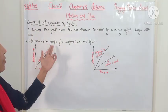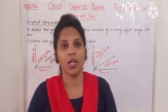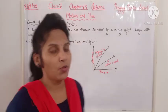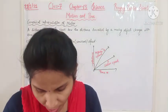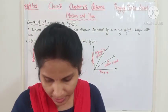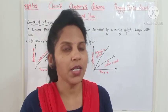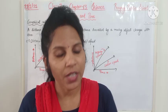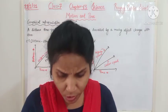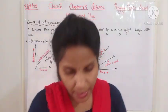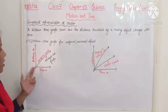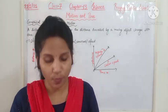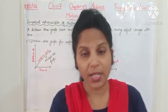Now we will study the distance-time graph for uniform or constant speed. When an object moves with uniform speed, it travels equal distances in equal intervals of time. The distance traveled by the object is proportional to time. When two things are directly proportional to each other, the graph between them is a straight line.